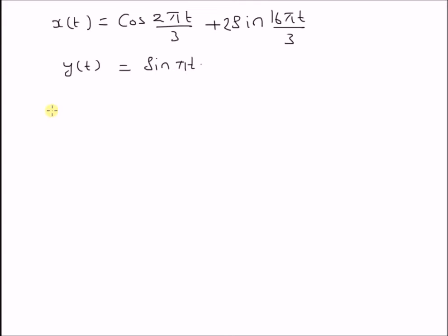Now, we want to determine the period of the product z(t) defined as x(t) multiplied by y(t), which is clearly equal to the product of cos(2π/3·t) + 2sin(16π/3·t) multiplied by sin(πt).